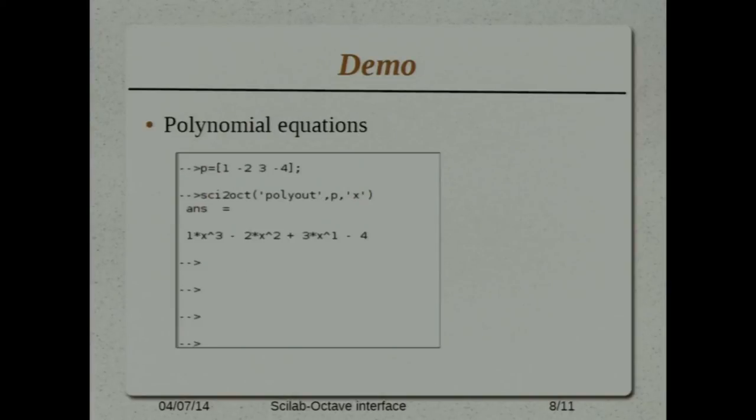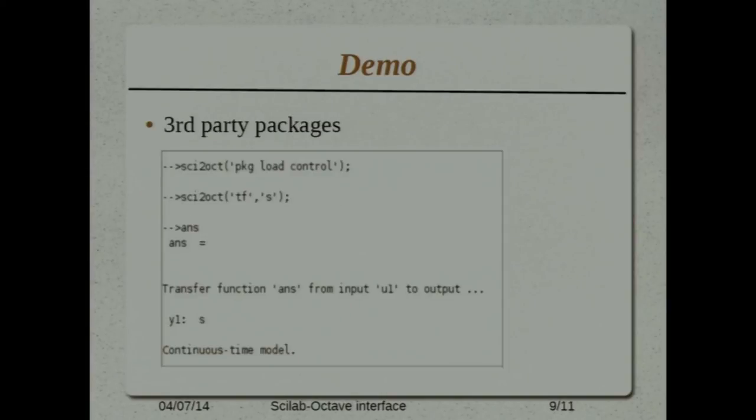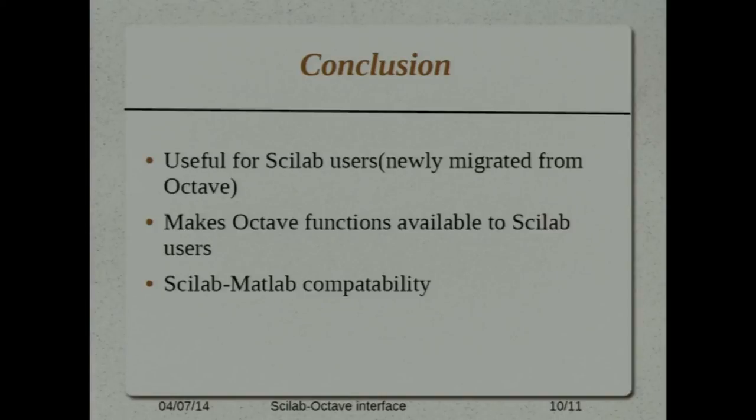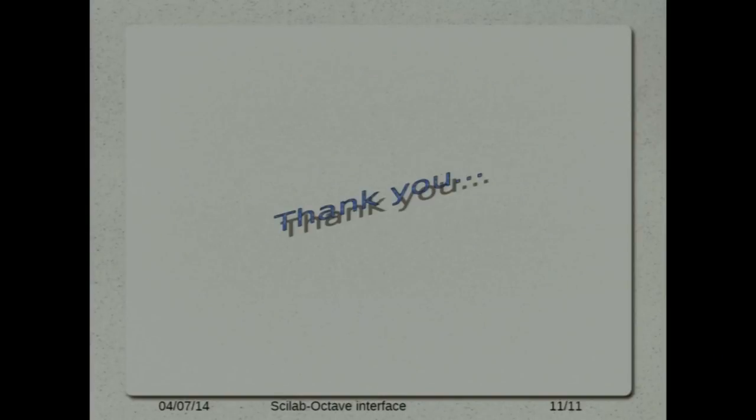Here is another example. In octave we have polyout function which takes vector and one character as arguments and displays polynomial equation. Here we can use third party packages also. Here I have used control system package. Conclusion, it is useful for Scilab users who are really migrated from the octave. They no need to worry about the octave advanced functionalities. We can make Scilab as compatible with Matlab. Thank you.